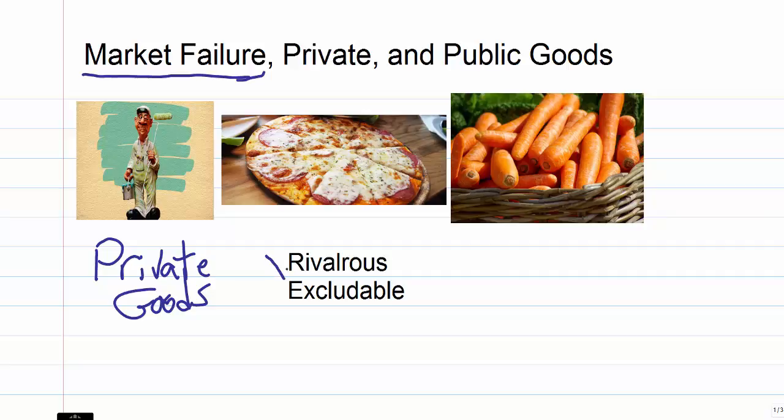Now rivalrous means that if more people want to try to get the benefits from a service, or if more people want to enjoy a good, then you need more of it. Or everybody's going to get less if you don't have more of it, if you don't spend more for the good.